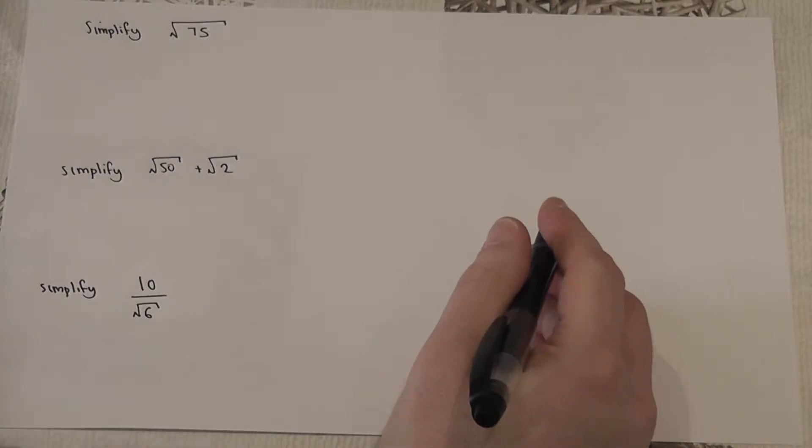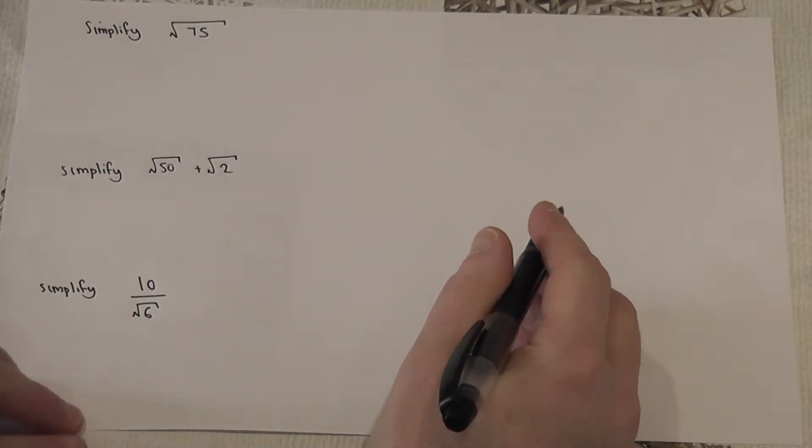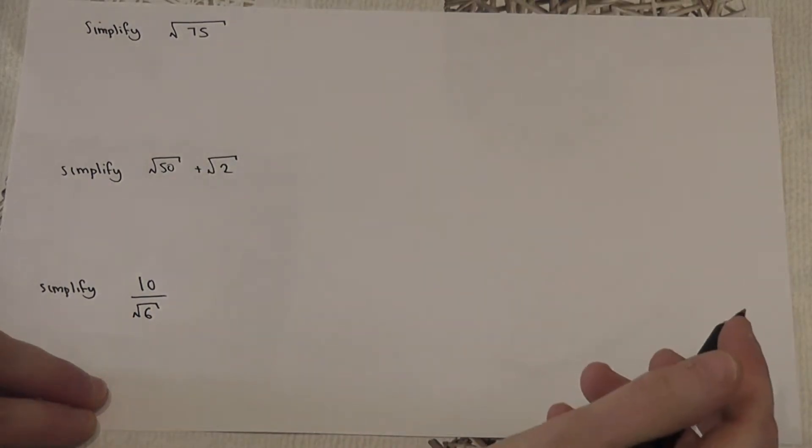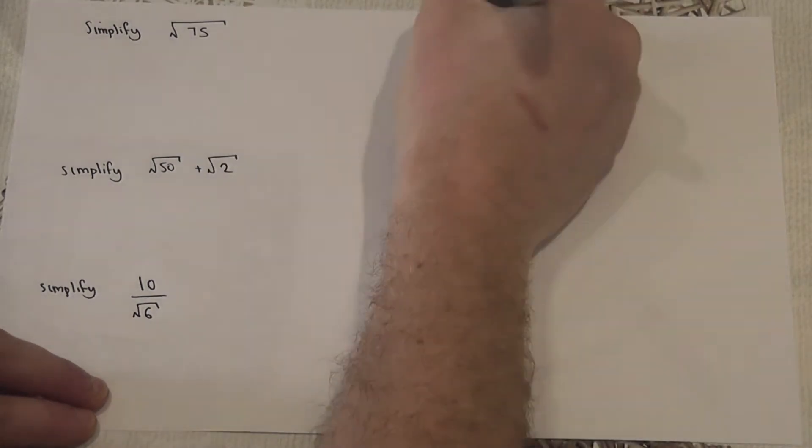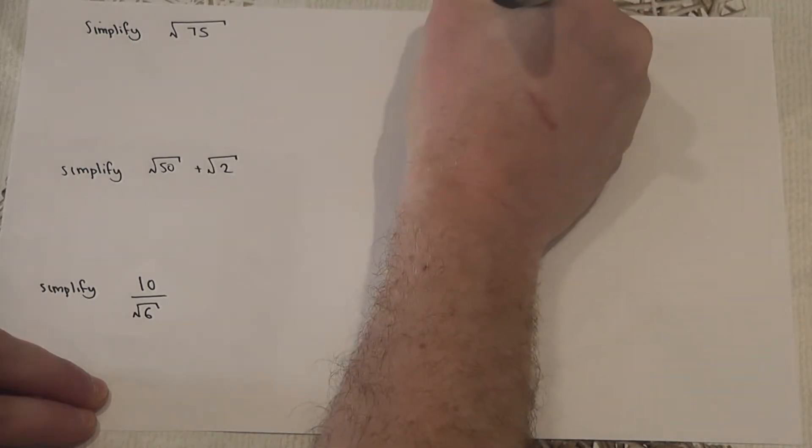In this video we review three quick surd skills. If you're asked to simplify or work with surds, my advice is to always reflect on the square numbers: one times one is one, two times two is four, etc.